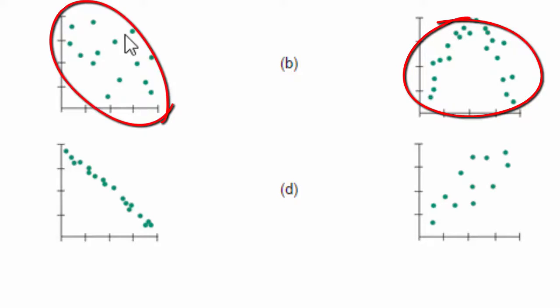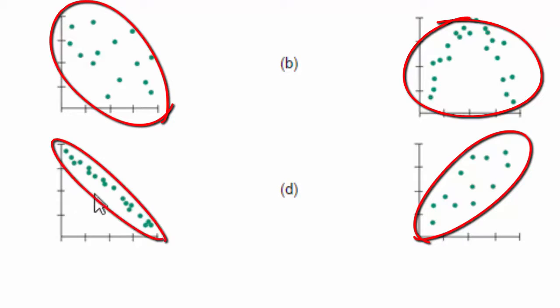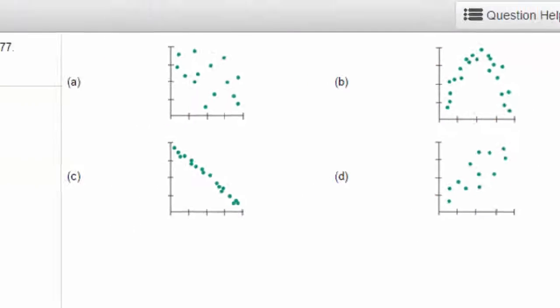This one's closer to zero because it would be scattered out more. This one's more like a one, and this one's extremely like a one. If you draw around it, that's why it's close to negative one. It's very strong.